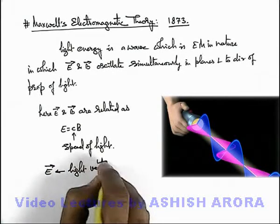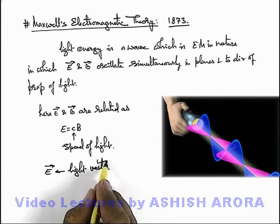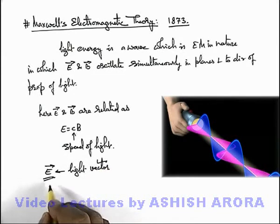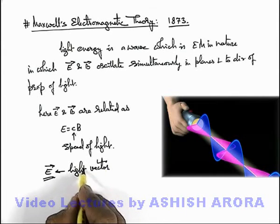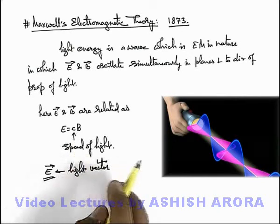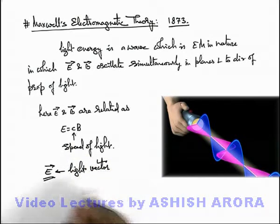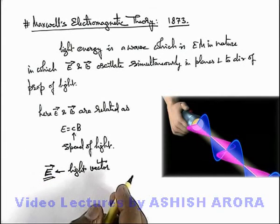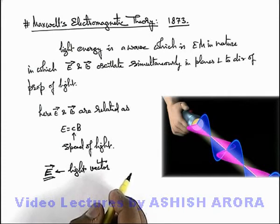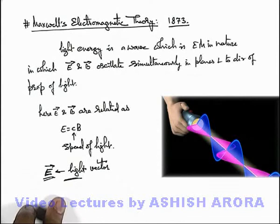Because for the human eye and most of the phenomena associated with light, the electric field vector is responsible for sensation and other characteristics of light. The magnetic field is also useful for propagation of energy in the direction of propagation, but it is the electric field vector which is responsible for most of the characteristics of light, including the vision sensation in the human eye. So the electric field vector is generally termed as the light vector.